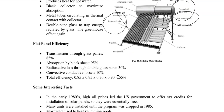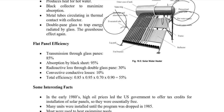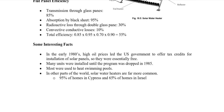For flat panel efficiency: transmission through glass is 85 percent, absorption by the black sheet is 95 percent, and radiative, convection, and conduction losses reduce overall efficiency to about 55 percent. Since solar energy is essentially free, 55 percent efficiency is quite good. Interestingly, in the early 1980s when oil prices were high in the United States, the government offered tax credits for solar panel installation, making them essentially free, and many units were installed until the program was dropped in 1985.